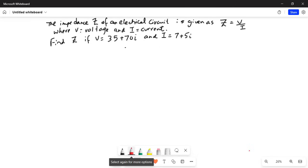Find Z if V equals 35 plus 70i and I is 7 plus 5i, where i is the imaginary number.